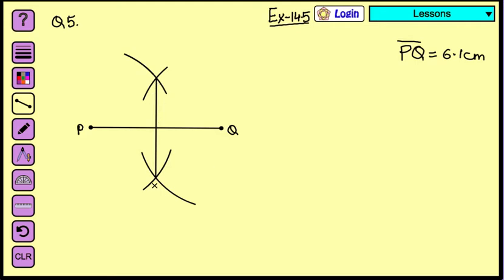Now this is the one which is bisecting PQ. This is the bisector. We can mark it as for example we can mark it as AB. So let's mark the intersecting points.